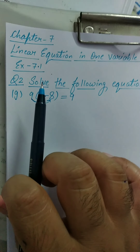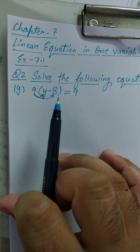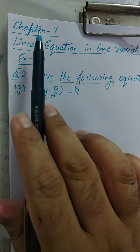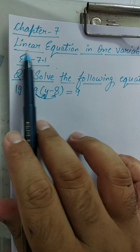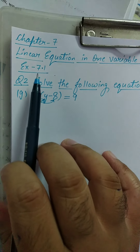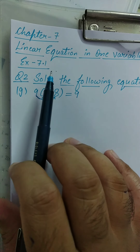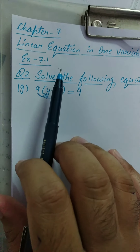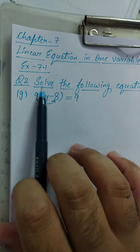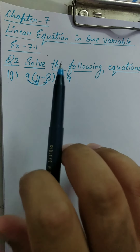Good morning all of you. I hope you all are fine. Welcome back in our mathematics class. As you all know, we are on chapter number 7, linear equation in one variable. Come to exercise 7.1. In exercise 7.1, I have already discussed question number 1. Now come to question number 2: solve the following equation and verify your result.